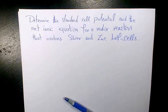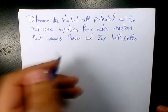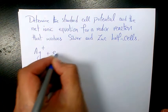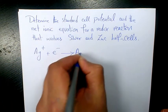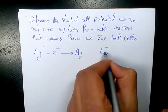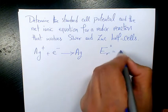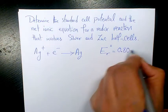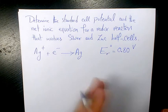In this example, I want to determine the standard cell potential and the net ionic equation for a redox reaction that involves silver and zinc half-cells. So start with silver: Ag+ plus one electron is going to give me Ag, and the standard reduction potential based on the table is 0.80 volts.